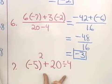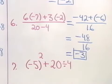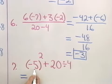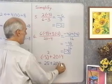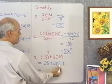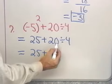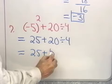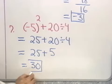This problem involves an exponent: negative 5 to the second power plus 20 divided by 4. According to order of operations, I take care of exponents first. Negative 5 to the second power is negative 5 times negative 5, which is 25. Then I have 25 plus 20 divided by 4. I have addition and division, so I do division before addition: 20 divided by 4 is 5. Then 25 plus 5 comes out to be 30.